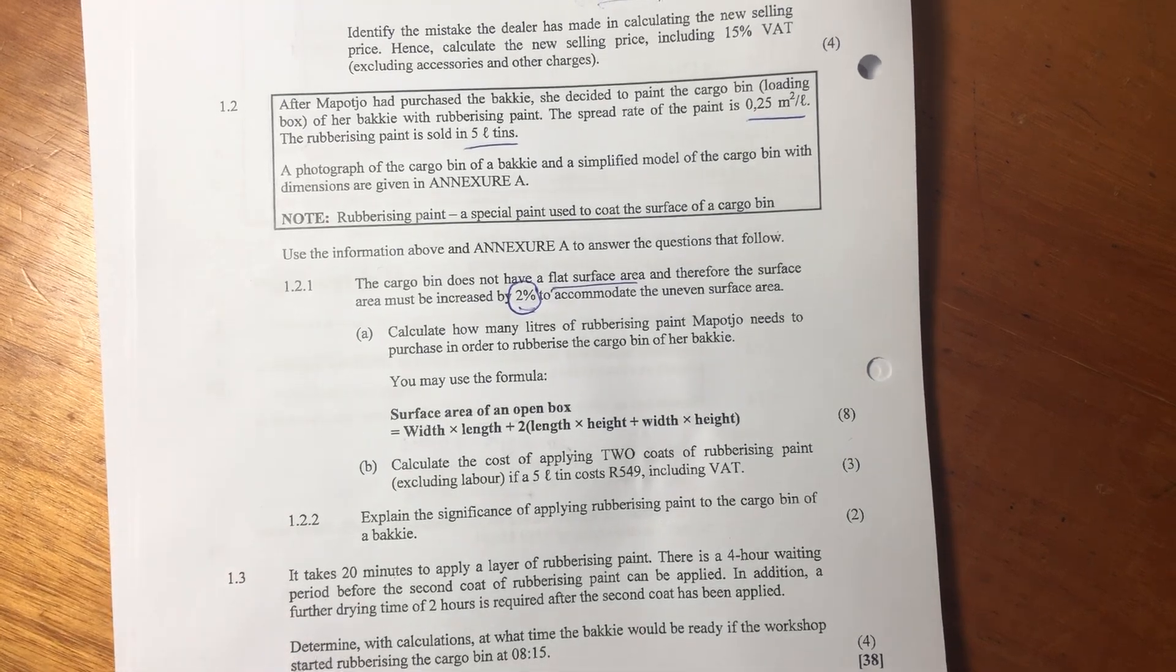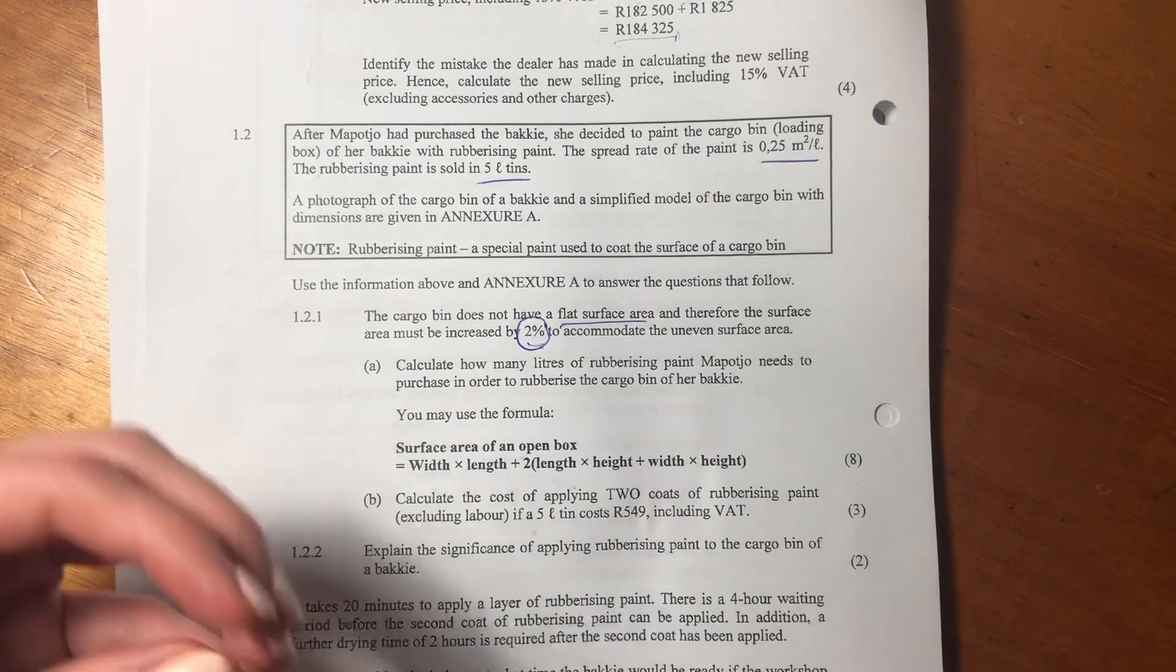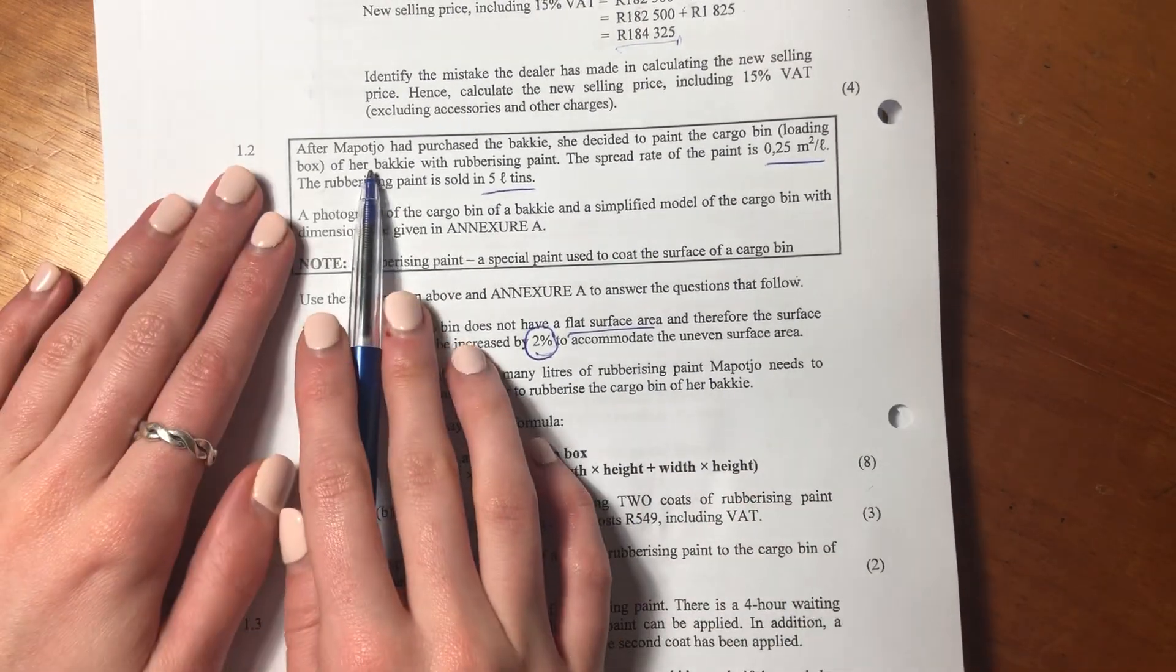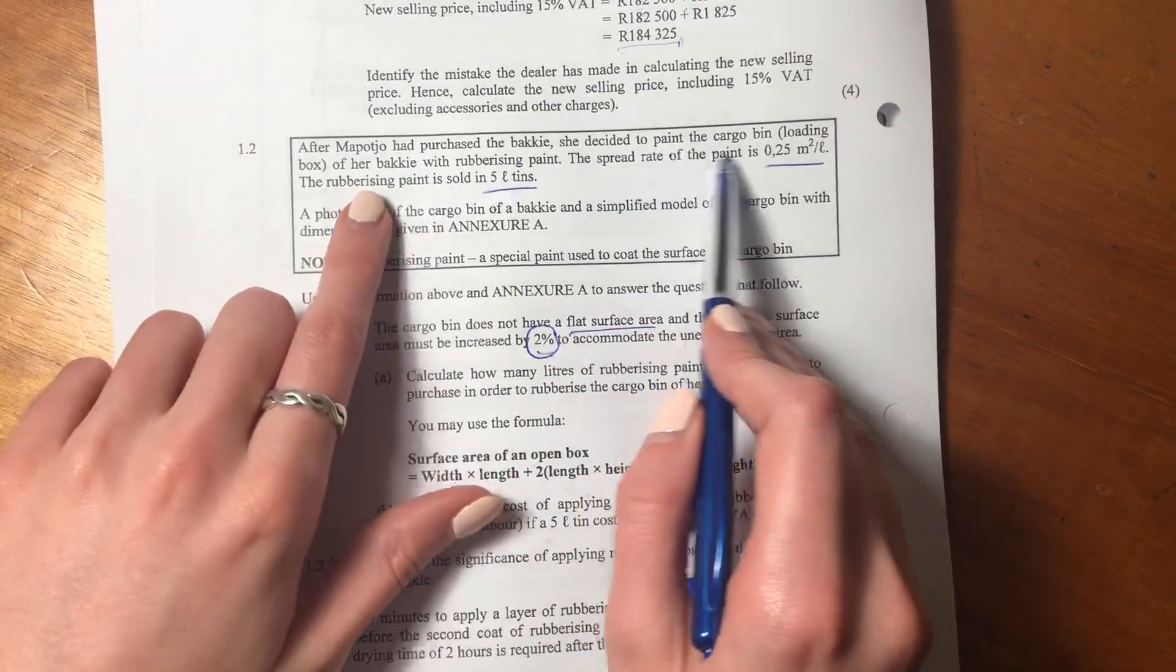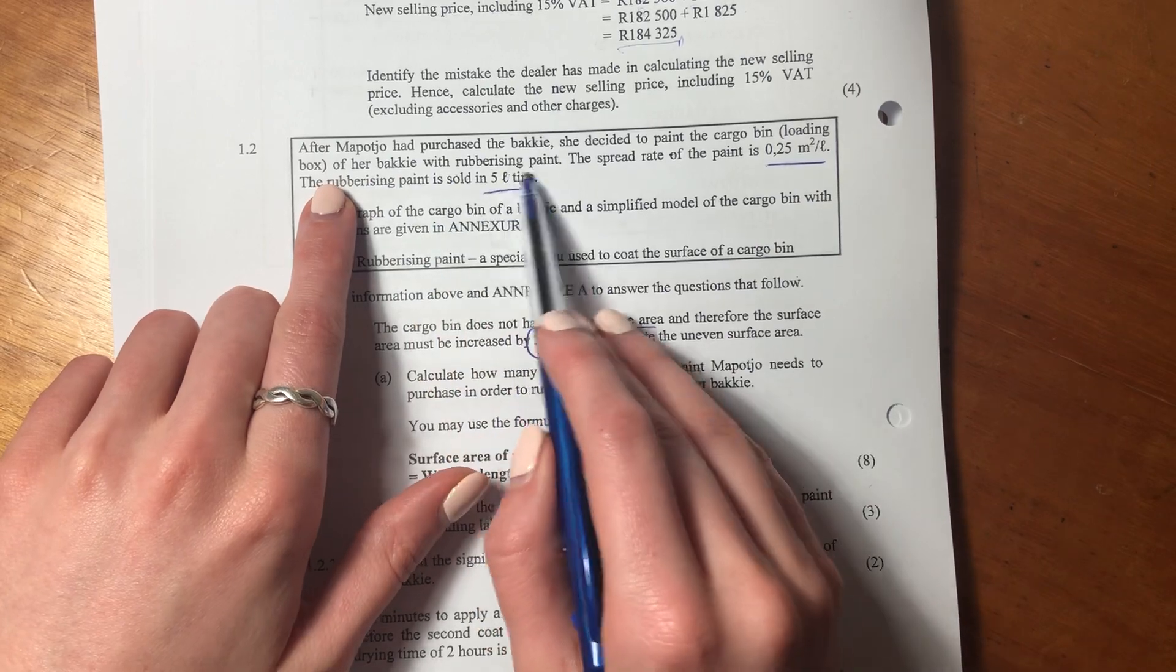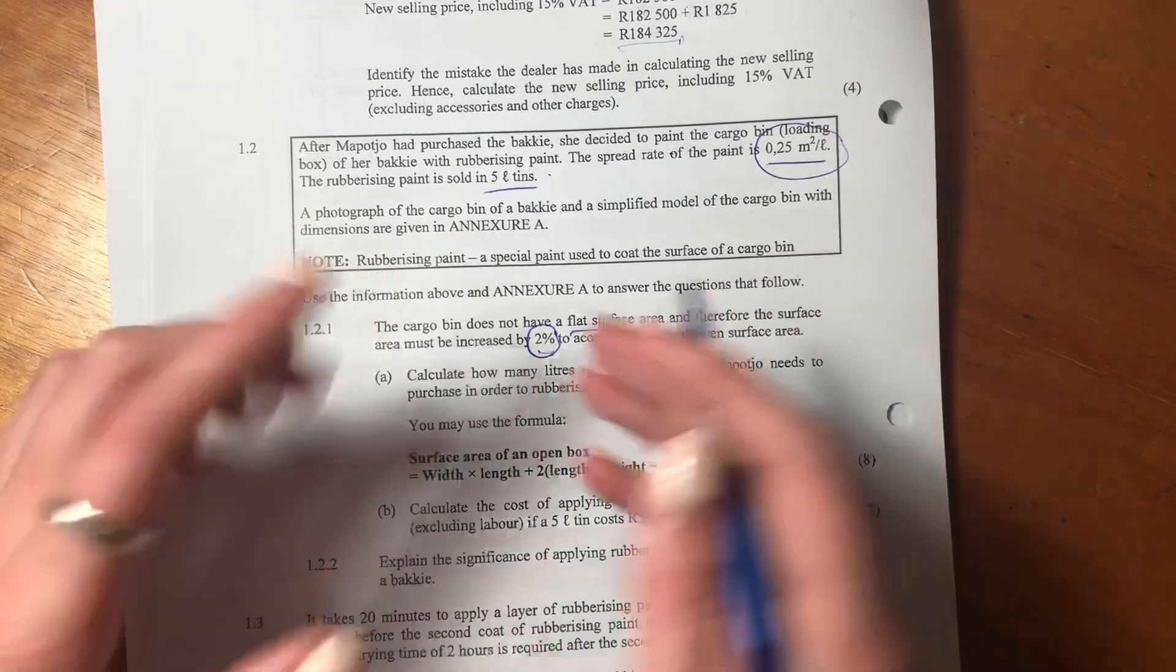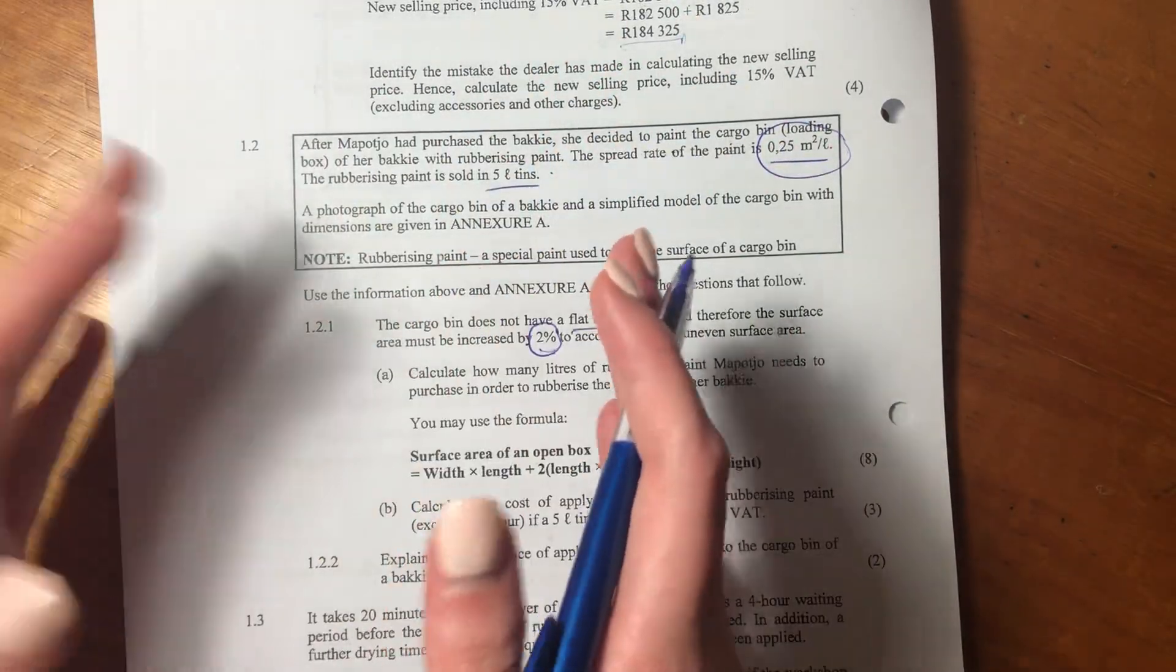Hey guys, let's move on to 1.2. This is one of these area questions which also integrates a little bit with finance. After Mopocho had purchased the Bucky, she decided to paint the cargo bin loading box of her Bucky with a rubberizing paint.